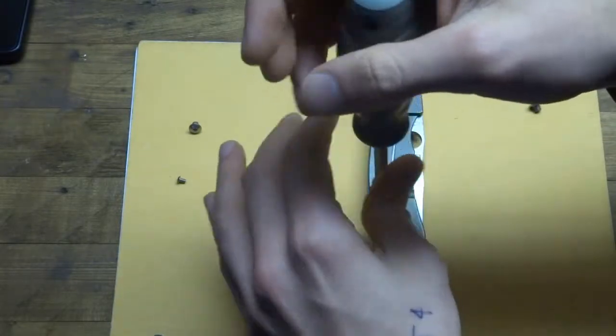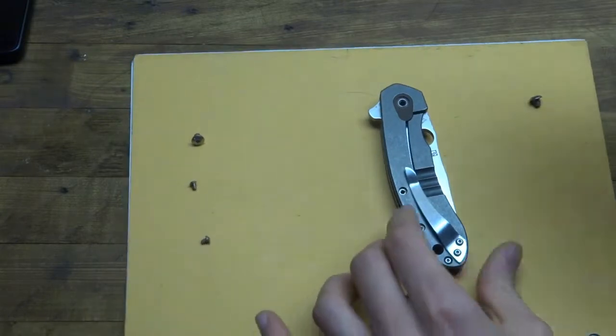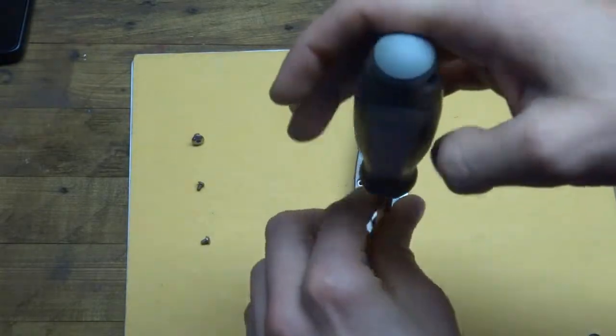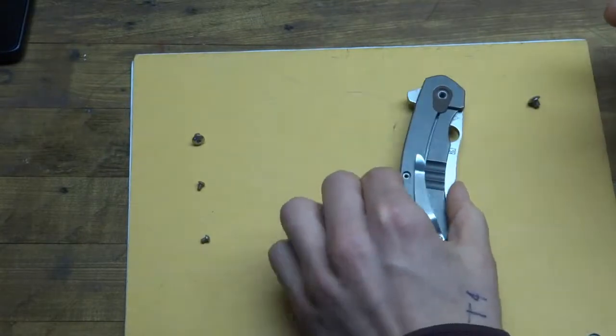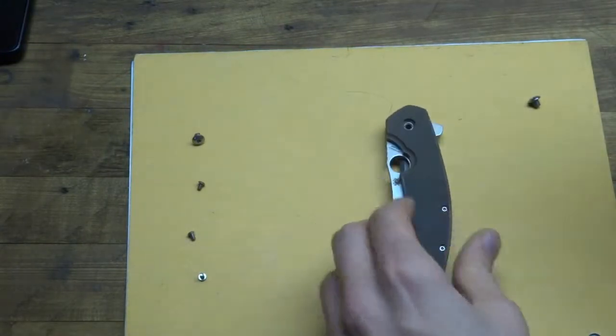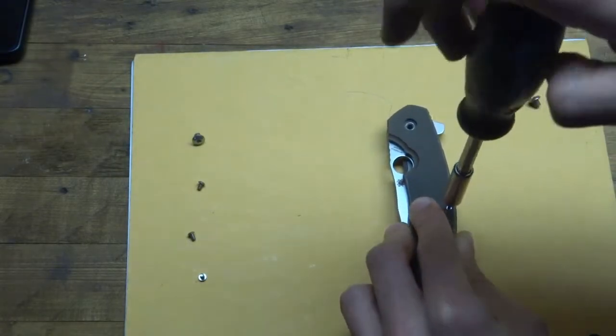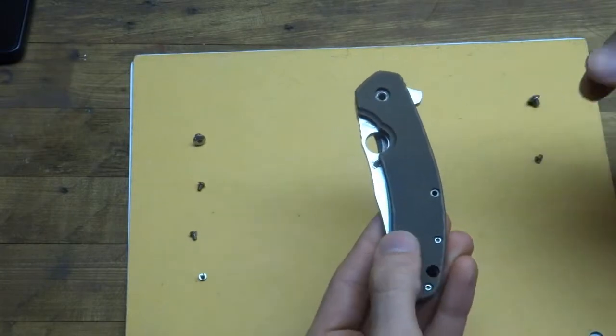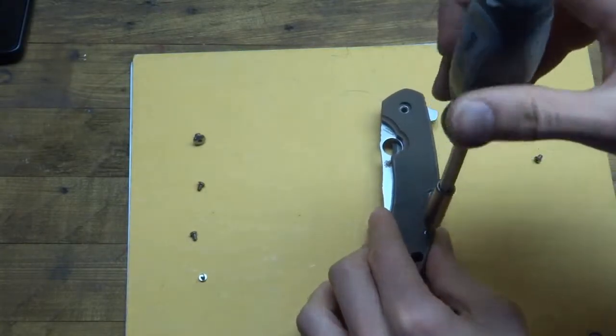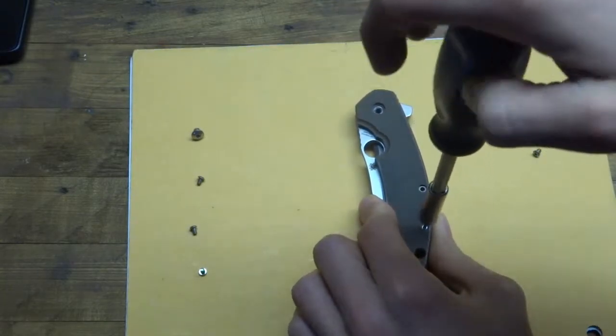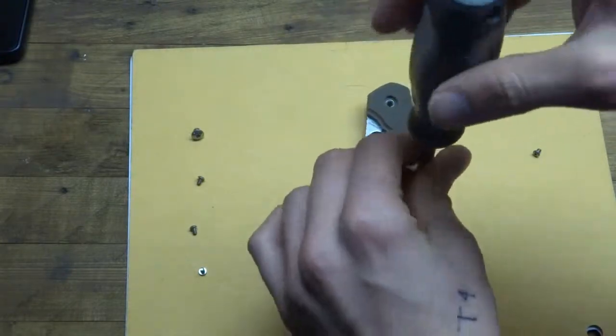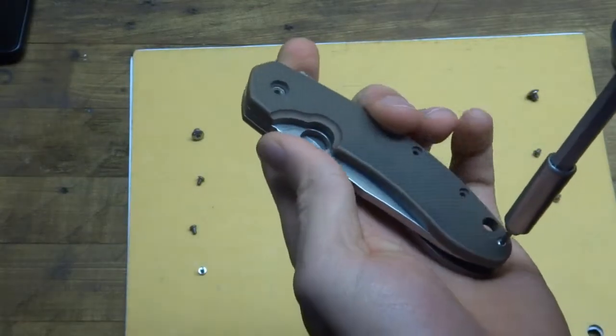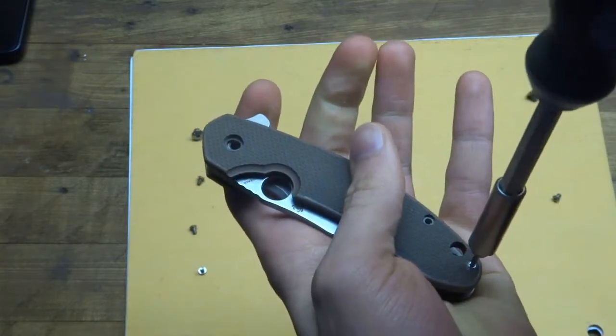I'm not going to take the pocket clip off because I don't believe that that's necessary to take this knife apart. There's actually a good crack, a good seal to be broken here. I've only lightly carried this knife, by the way. It's never seen particularly hard use. I baby this knife a little bit because it's one of my most expensive knives. But it does get used, and it does get carried nonetheless.